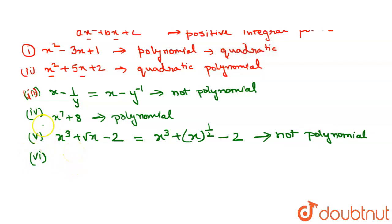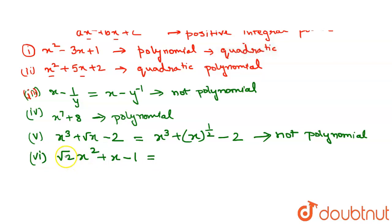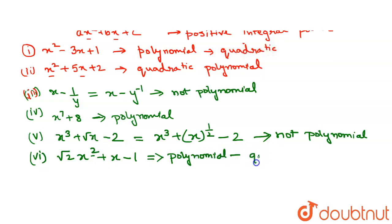Question number 6 is root 2 times x squared plus x minus 1. Here, root 2 is a coefficient and does not affect the powers. All powers of the variables are positive and in whole numbers, so this is a polynomial — specifically a quadratic polynomial.